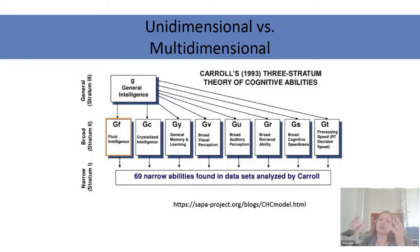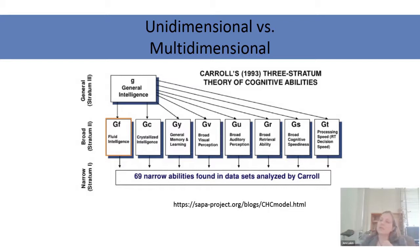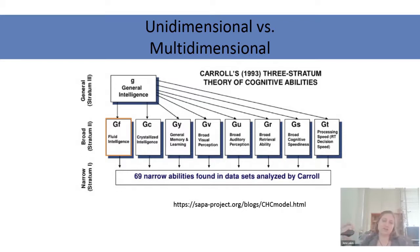General intelligence is defined by all of these broad abilities being averaged up, so you can only measure general intelligence by measuring lots of different broad abilities and getting a composite score. The same way, each of these broad abilities is defined by the narrow abilities — there are tons of narrow abilities that define each of the broad abilities.